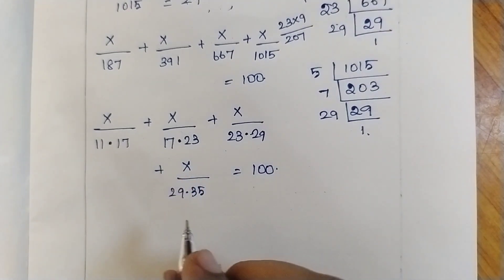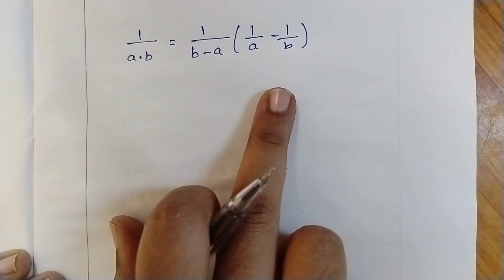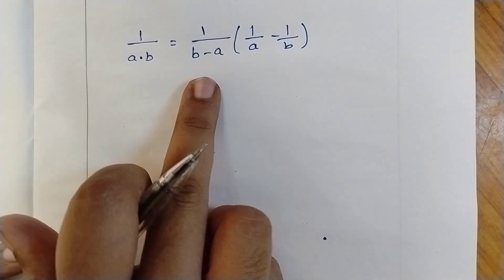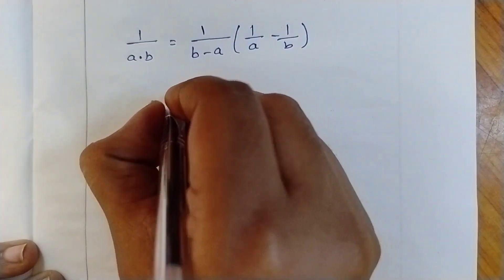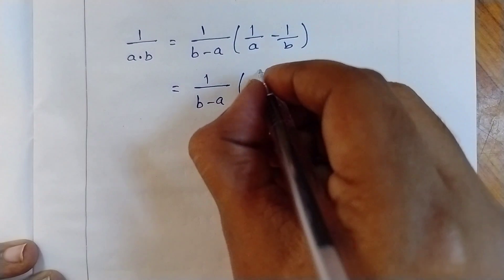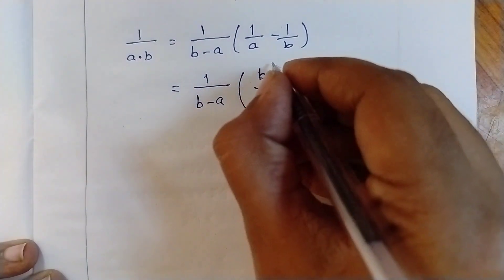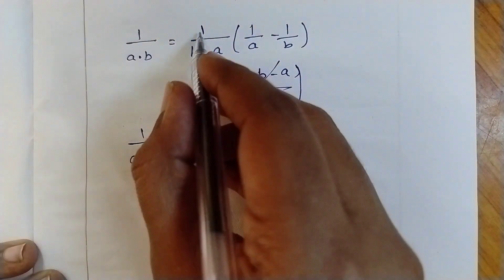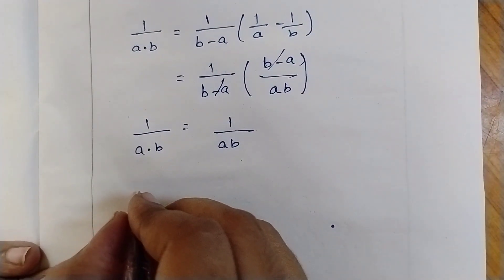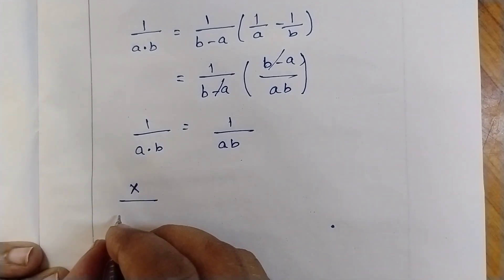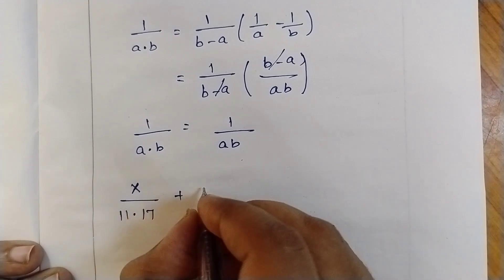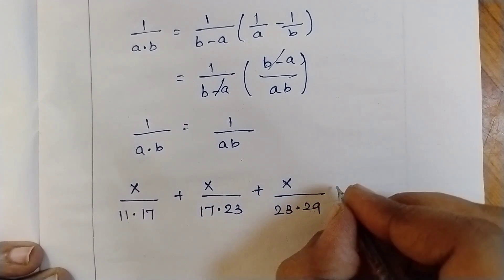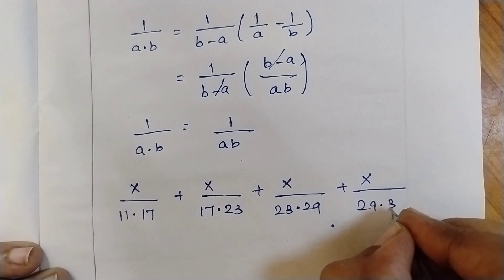Now we need to know how to solve the above problem. We need to know this rule: 1/(A×B) can be written as 1/(B−A) × (1/A − 1/B). Let's check whether this is satisfied — 1/B minus 1/A equals (A−B)/(AB), so (B−A)/(AB) times 1/(B−A) gives 1/(AB). Therefore 1/(A×B) can be written as 1/(B−A) × (1/A − 1/B). In our question we have x/(11×17) + x/(17×23) + x/(23×29) + x/(29×35) = 100.